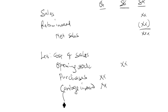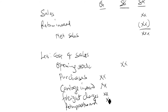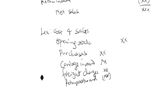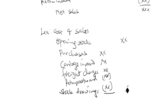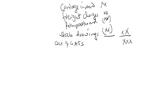We have freight charges to be added. Then you have to reduce with return outward — the purchases return. Another adjustment is stock drawings. Whatever we get there as the adjustment of purchases, combined with the opening stock, we end up with the cost of goods available for sale.